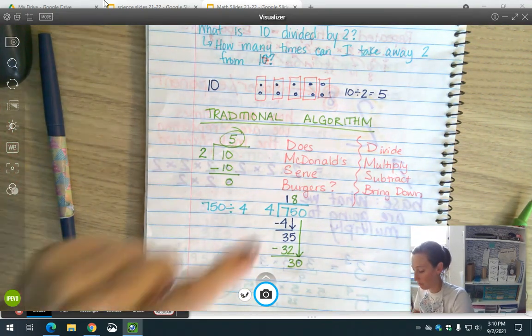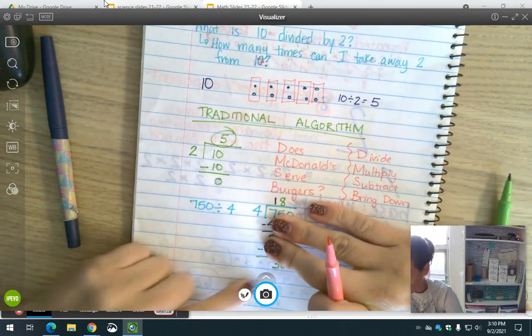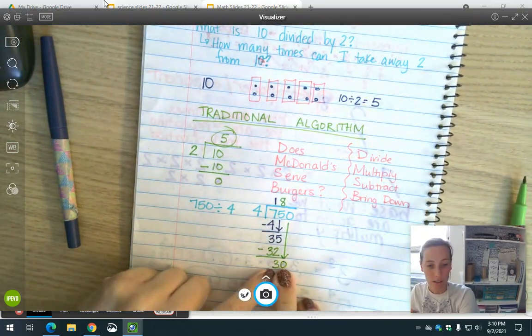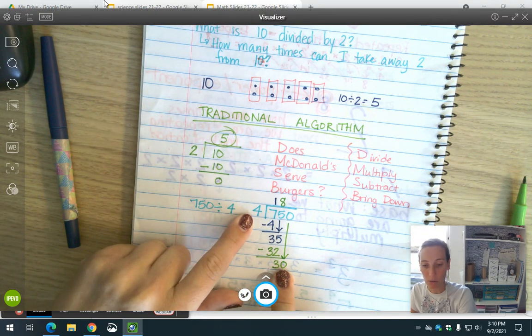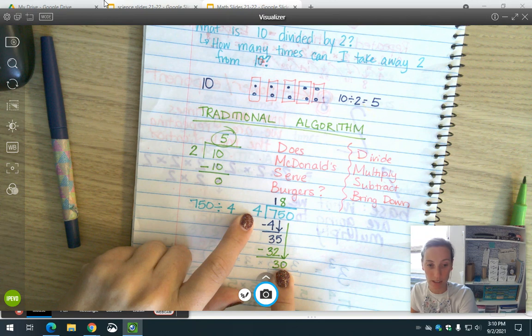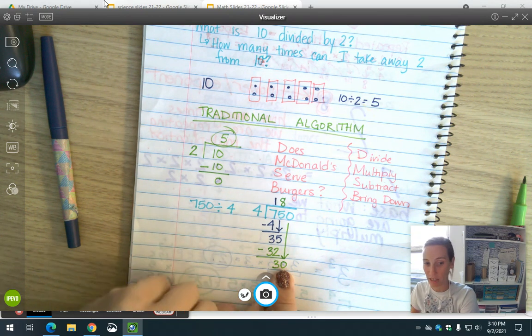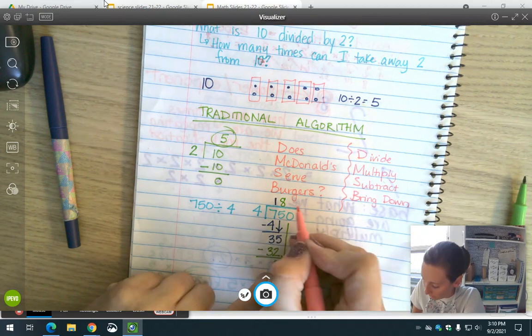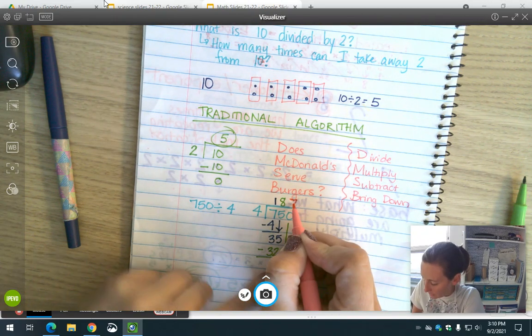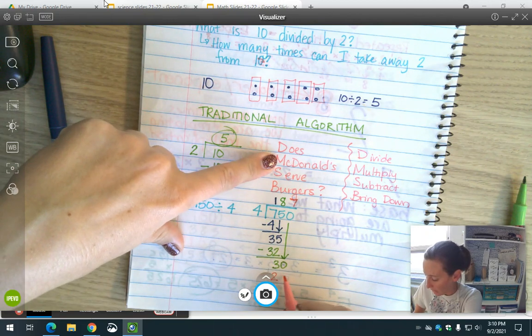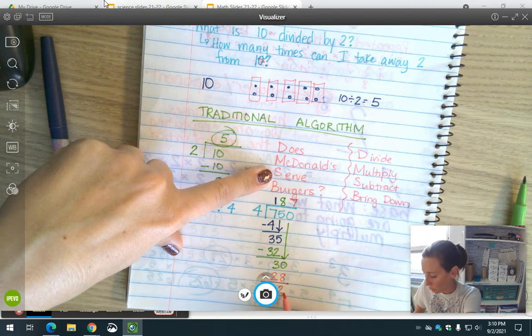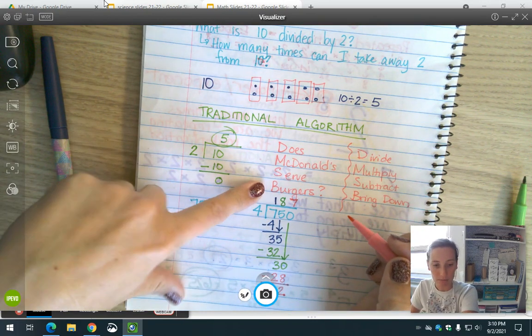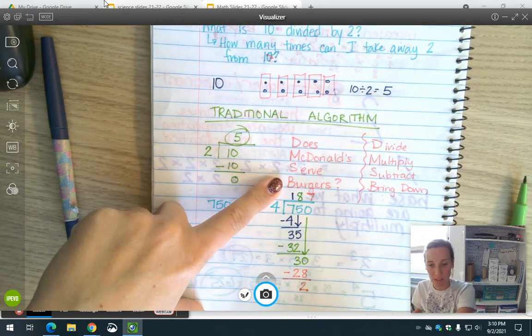B for bring down. I'm going to do it again. Now I'm thinking about the number 30. Does 4 go into 30? Yes. How many times does it go in? I know that 4 times 7 is 28, 4 times 8 is 32, that's too big, so I'm going to do 4 times 7. 7 times 4, multiply, is 28. S, subtract. 30 minus 28 is 2. B for bring down. I don't have anything left to bring down.